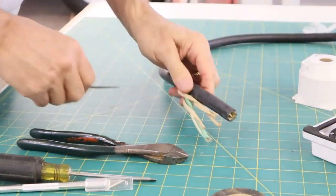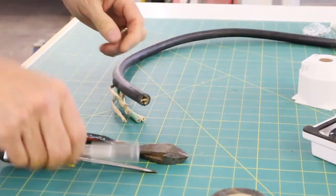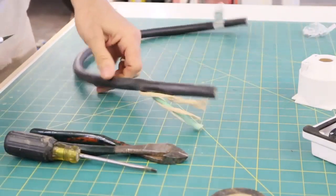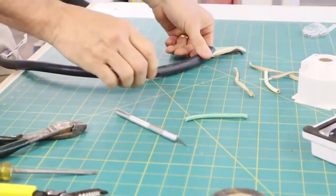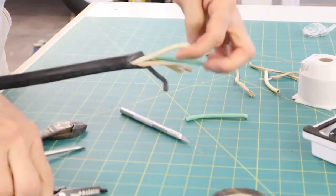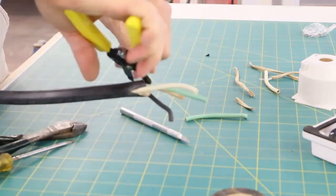I'm using what is called 10-2 stranded wire that I got from Lowe's. I had to strip out the outside insulation from the wire and get it down to the white wire, the green wire, and the black wire.